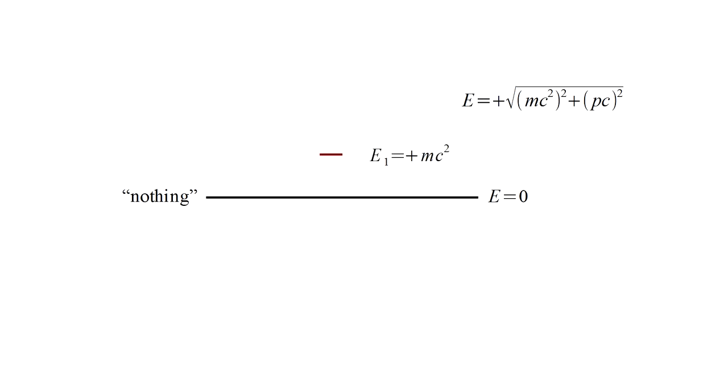The positive energy solutions have a minimum for momentum p equals zero. So the lowest positive energy level is E1 equals mc squared. Higher energy levels correspond to higher momentum, the electron moving faster and faster.